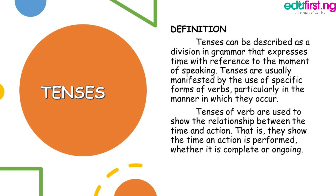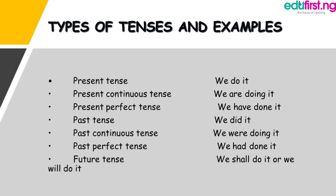Now, in this table here with the examples, I give a definite example which would help in analyzing the table. We can see the first is the present tense — 'we do it' — something that happens now, like 'we eat.' The second one is the present continuous tense — 'we are doing it' — something that's happening and hasn't ended, like 'we are eating' or 'we are praying.'